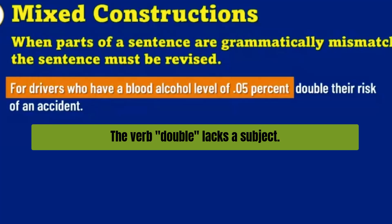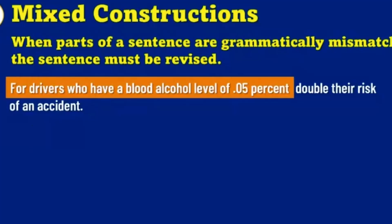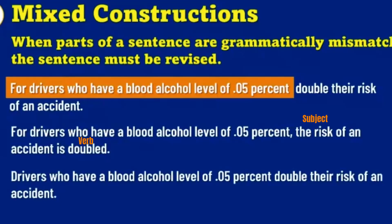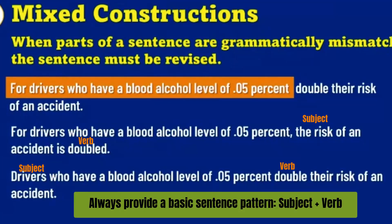Subject, verb, object. Subject, linking verb, predicate. So let's correct it. 'For drivers who have a blood alcohol level of 5%, the risk of an accident is double.' Or: 'Drivers who have a blood alcohol level of 5% double their risk.' Both of those provide the sentence a concrete subject and finite verb that is otherwise missing in the mixed construction.